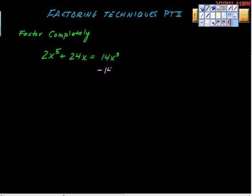So what I'm going to do is I'm going to add negative 14x^3 to both sides, so negative 14x^3. I intentionally did not put this negative 14x^3 under the 2x to the 5th, and I also didn't put it under the 24x to the 1st power.